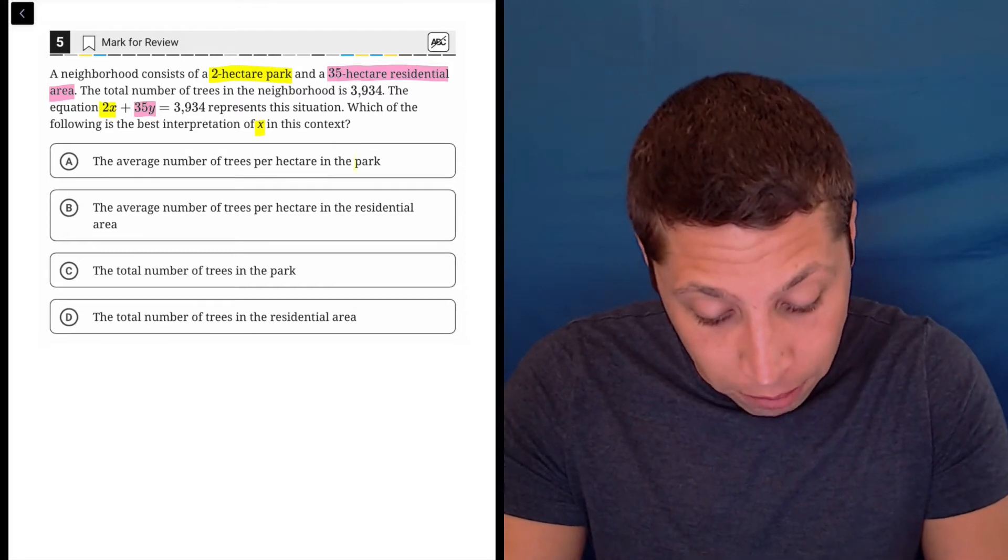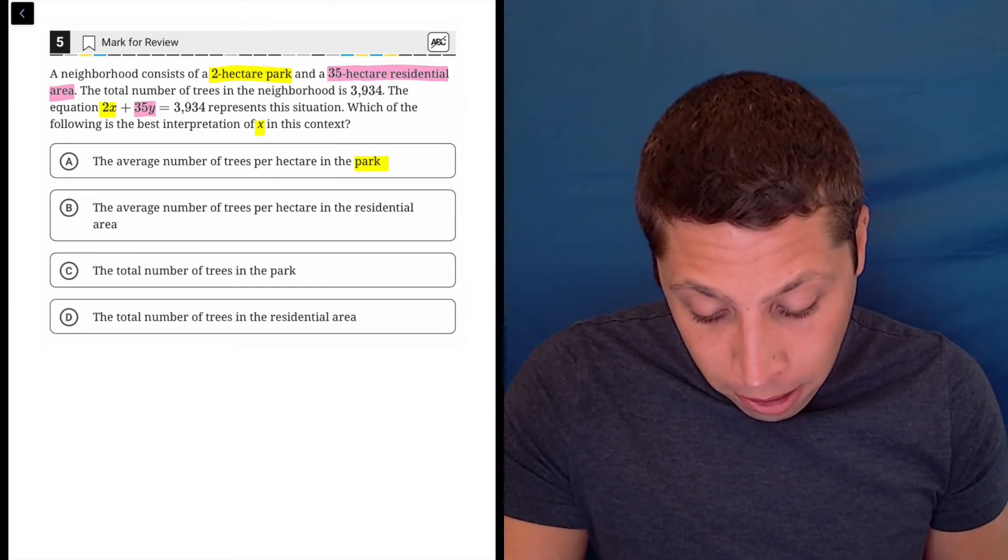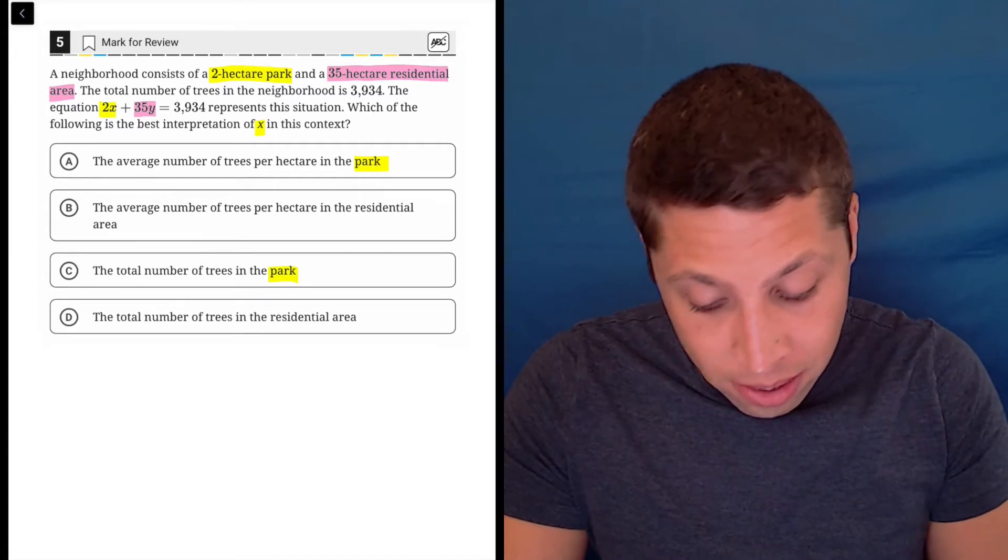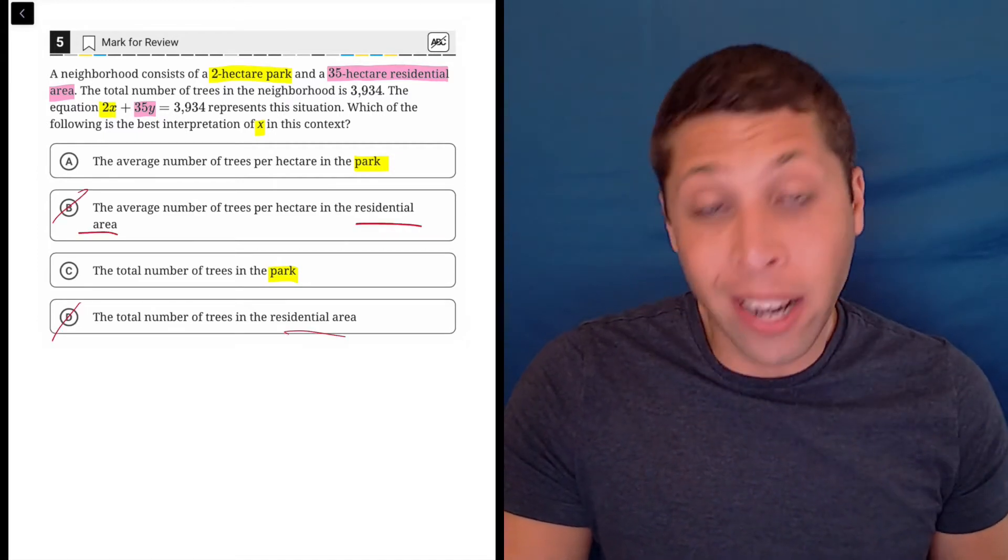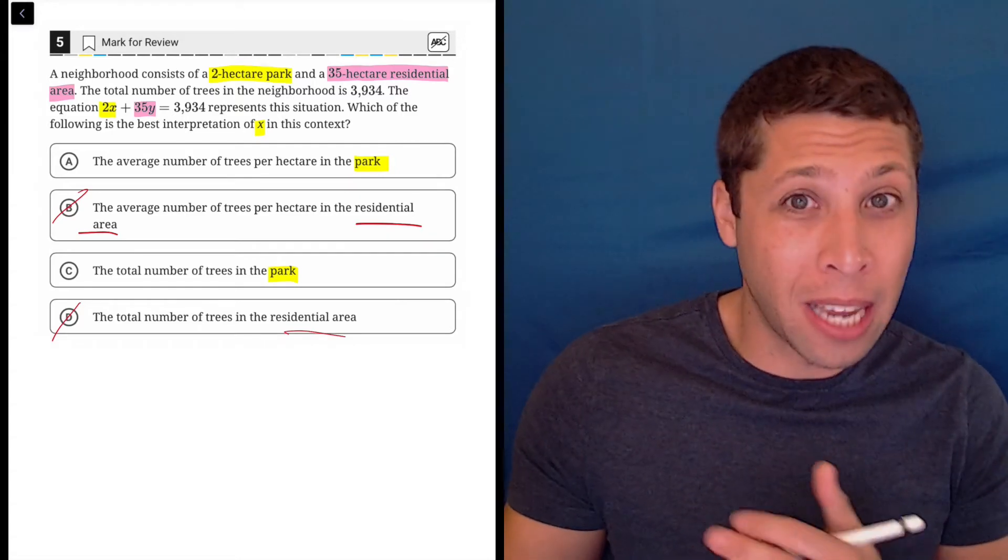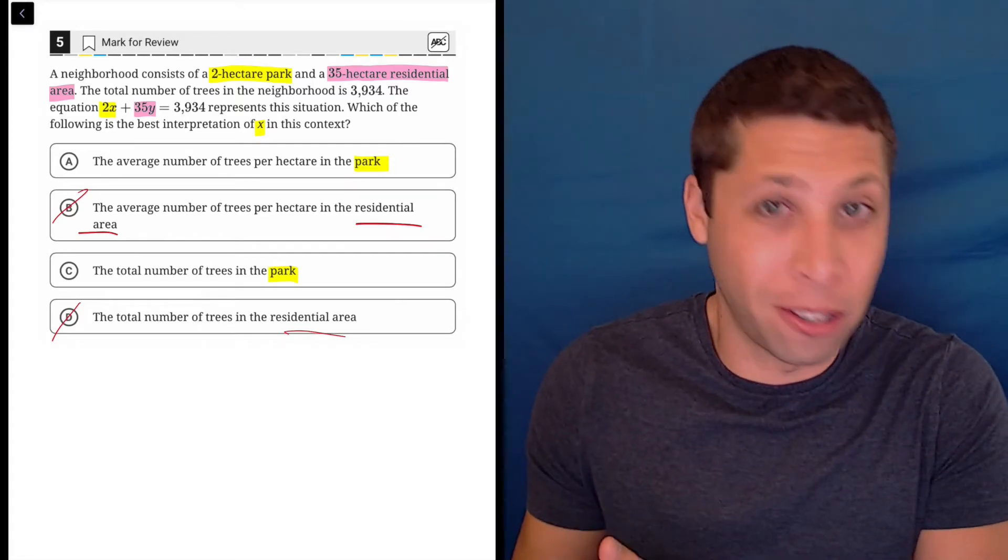So that's where my brain is going. I'm like, okay, choice A is about the park, choice C is about the park, and choices B and D are not. So right away, I'm at a 50-50 shot just by being able to connect a variable with half of the story.